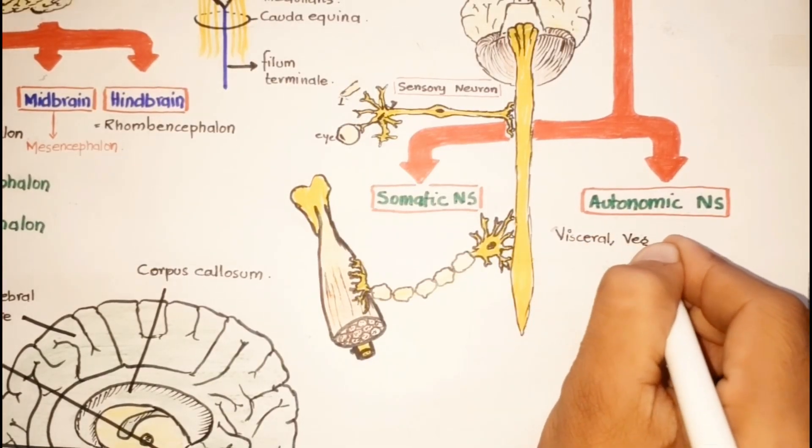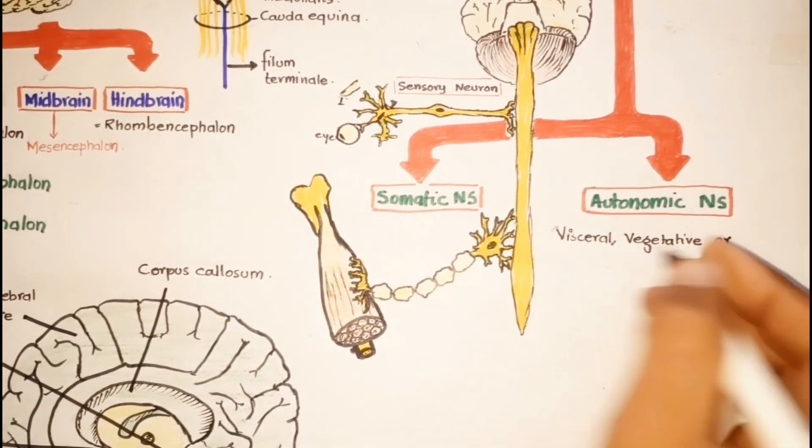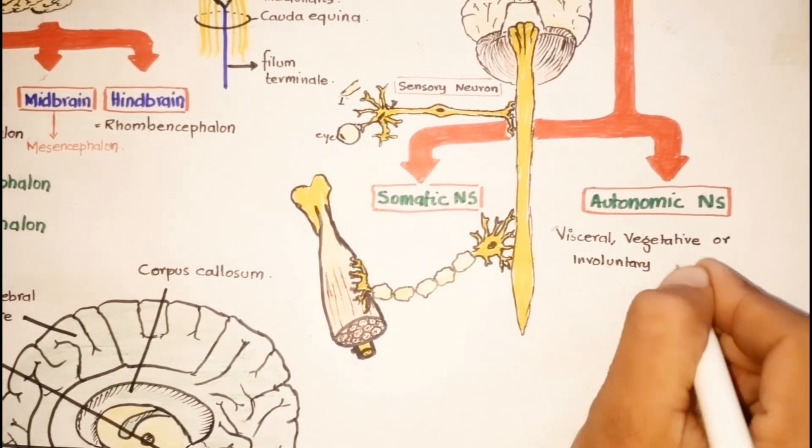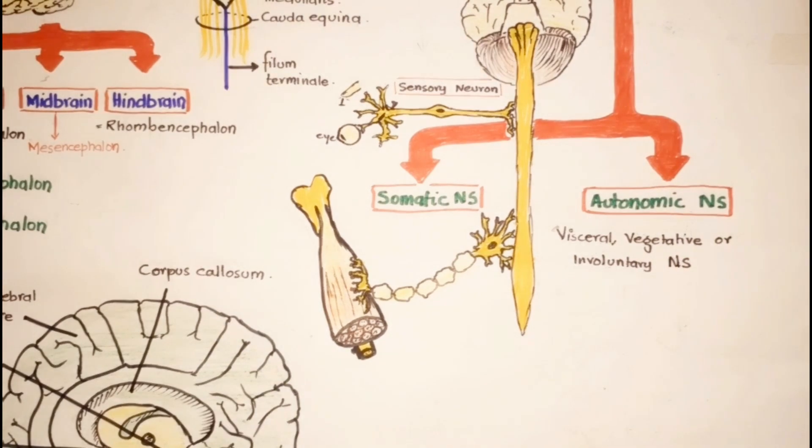This system is also known as the visceral, vegetative, or involuntary nervous system because of the involuntary nature of the autonomic nervous system as well as its functions.